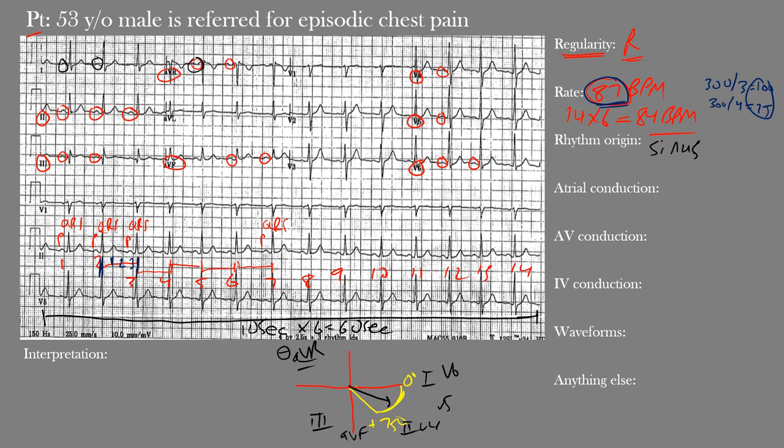For atrial conduction, we look at leads II and V1. The P waves are more evident in lead II. They appear normal, with duration within normal limits. The normal P wave duration in adults is less than 120 milliseconds, which is three small boxes. Our P waves are within normal limits — atrial conduction is normal.